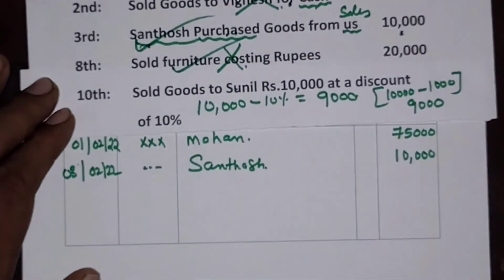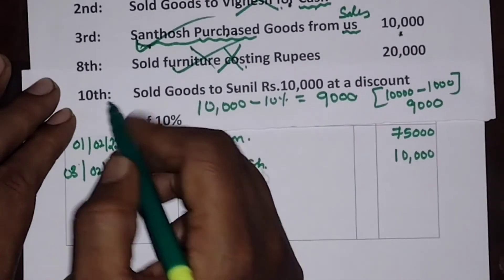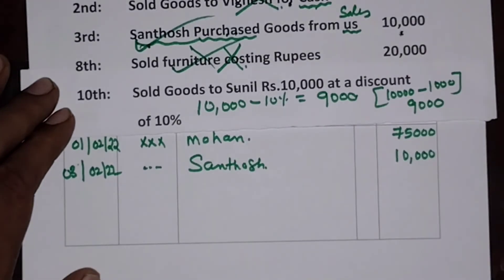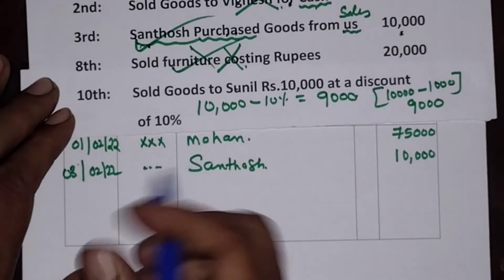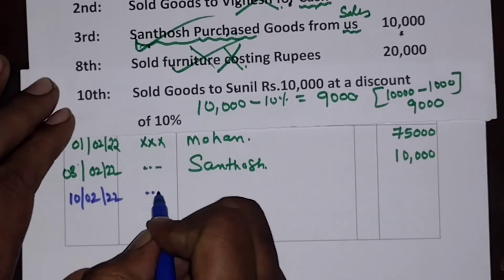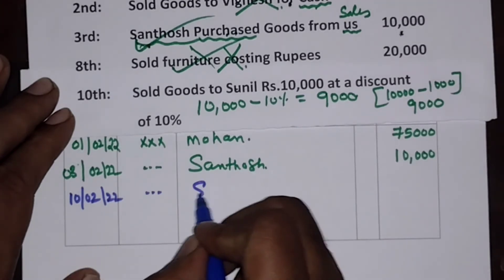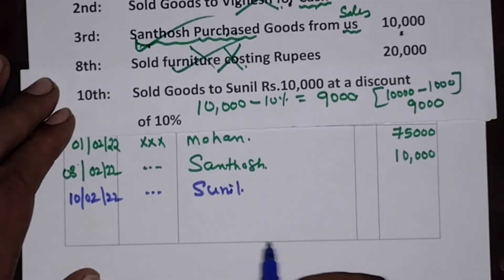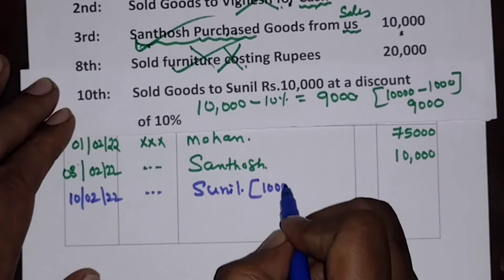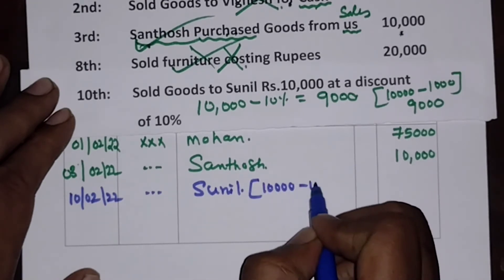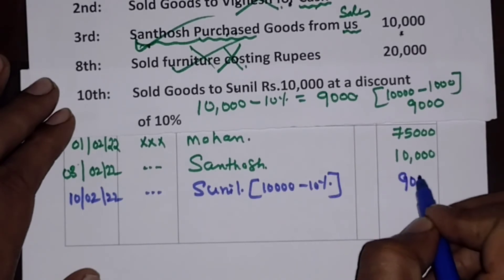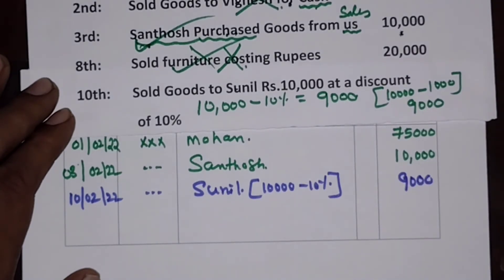After Santosh, sold furniture — that won't appear. Next entry: sold goods to Sunil on 10th February 2022. Amount is ₹10,000 minus 10% discount, giving us ₹9,000.